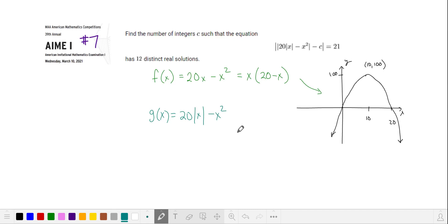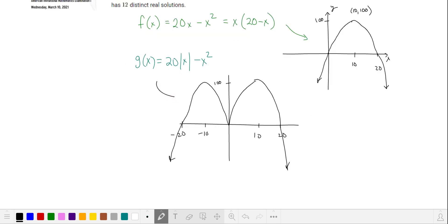If g of x is 20 times the absolute value of x minus x squared, then it looks the same to the left and to the right of the y-axis. So g will look something like this.